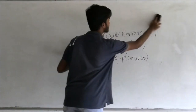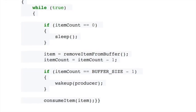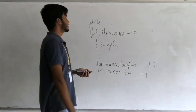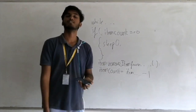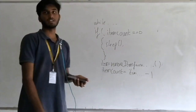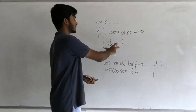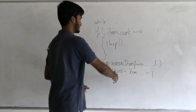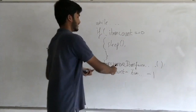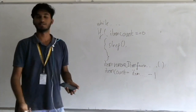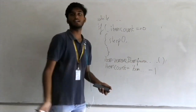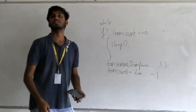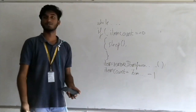Now for the consumer block: if item count equals zero, meaning there is nothing in the buffer, the consumer is supposed to sleep because there's nothing to consume. The consumer then removes an item from the buffer — it consumes an item. When it does, item count equals item count minus one, which decreases the buffer count by one.